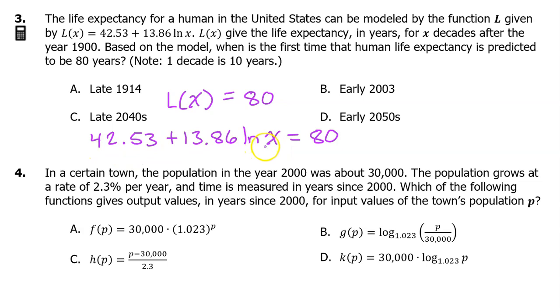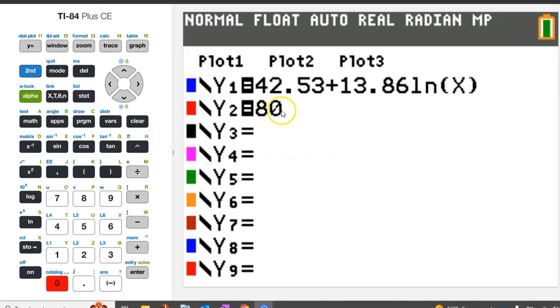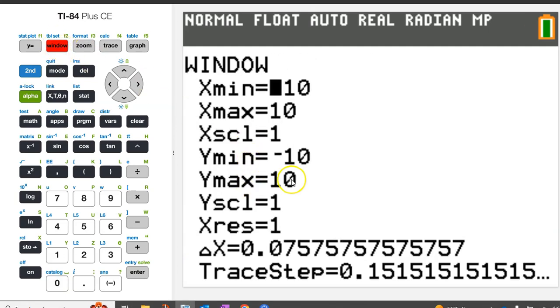They are asking us to solve the equation L(x) equals 80. In other words, we need to solve this equation for x. Let's type in the left side of the equation as y1 in the graphing calculator, and let's type in 80 as y2. The solution to the equation will be the intersection of these two curves. Since one of the curves is a horizontal line at 80, we need to adjust the window so that y max is bigger than 80. Let's make it 100.